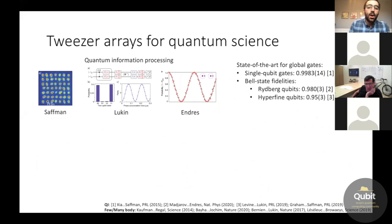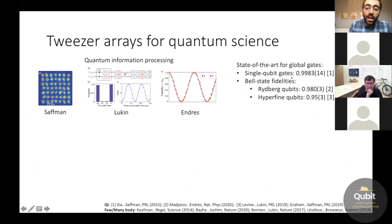So this suite of capabilities has really led to a large amount of progress in recent years, including in quantum information processing, where in tweezer arrays people have demonstrated single-qubit gates above 99% fidelity, Bell state fidelity in long-width hyperfine qubits at the 95% level. And as we've heard, these systems can be used for many-body physics using long-range Rydberg interactions to engineer spin models, as well as to look at things like really deterministic, well-defined Hubbard systems. And so in terms of the exact science that's been pursued, this has really run the gamut from few-body Hubbard physics to transverse Ising models to non-equilibrium spin dynamics and Kibble-Zurek physics, to topological phenomena like we just heard.